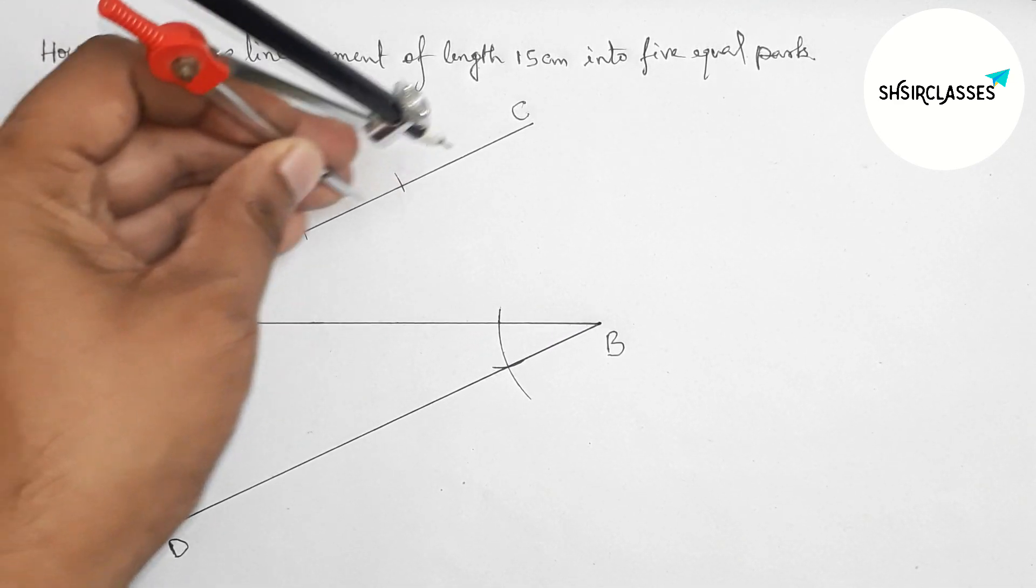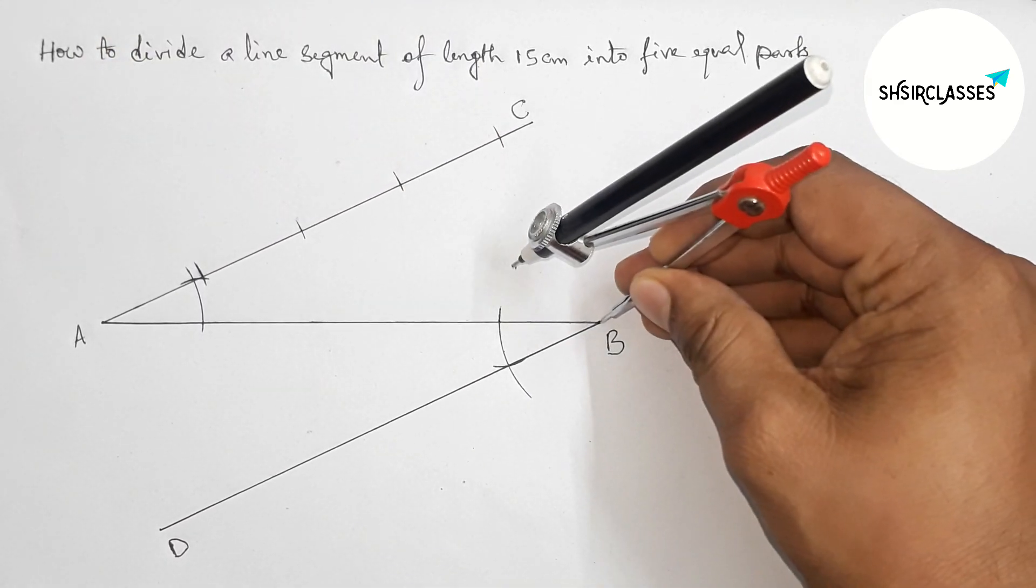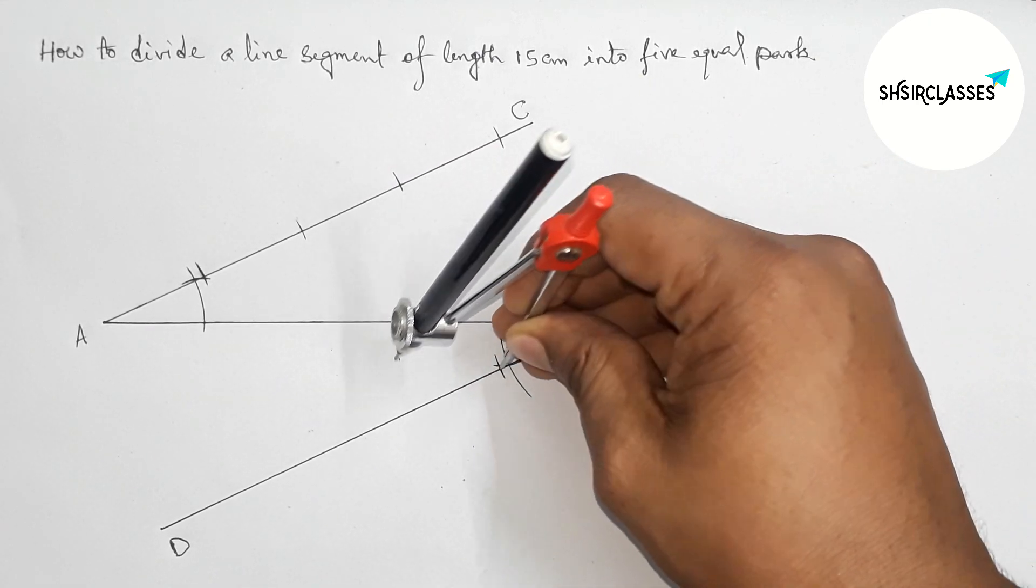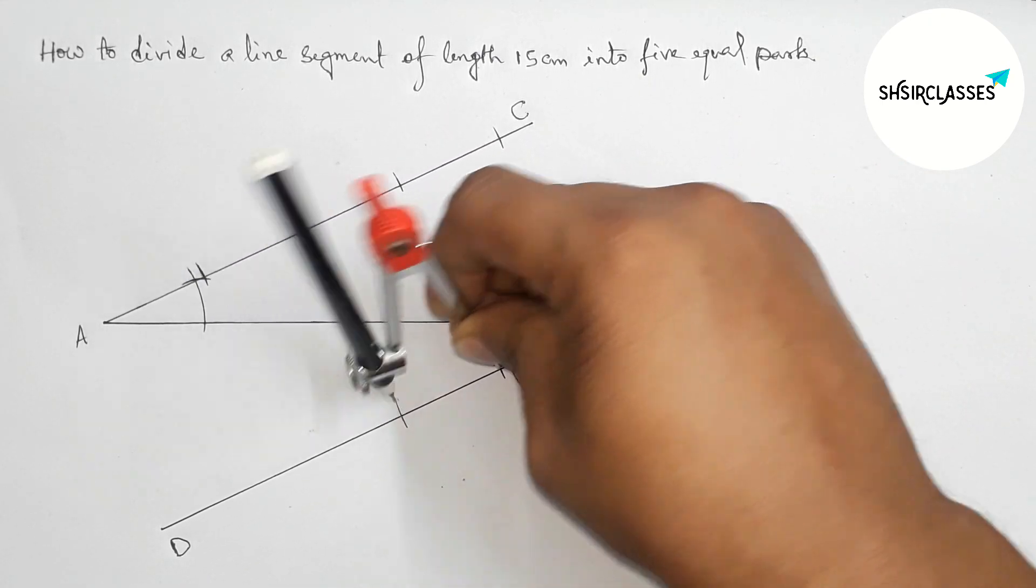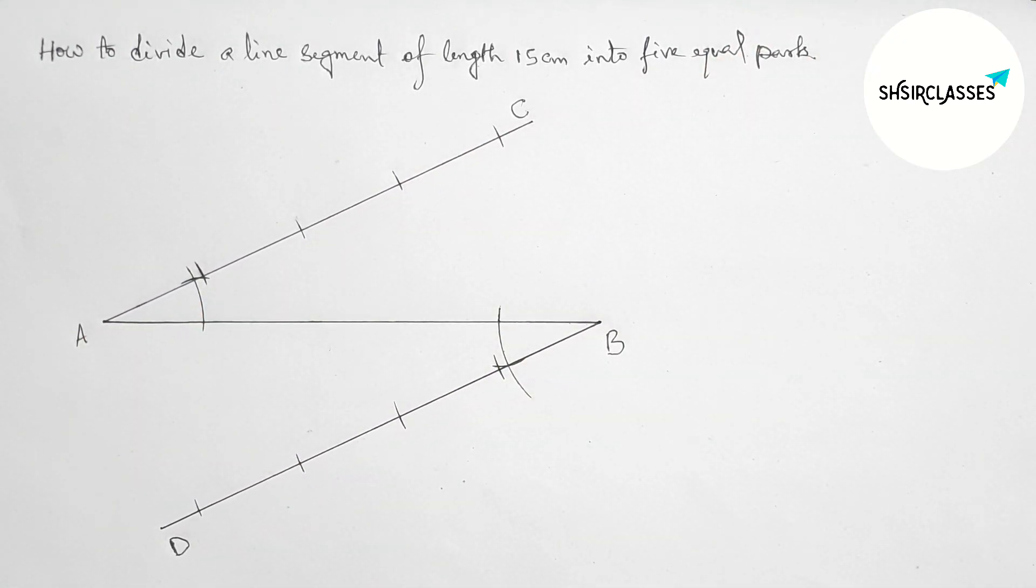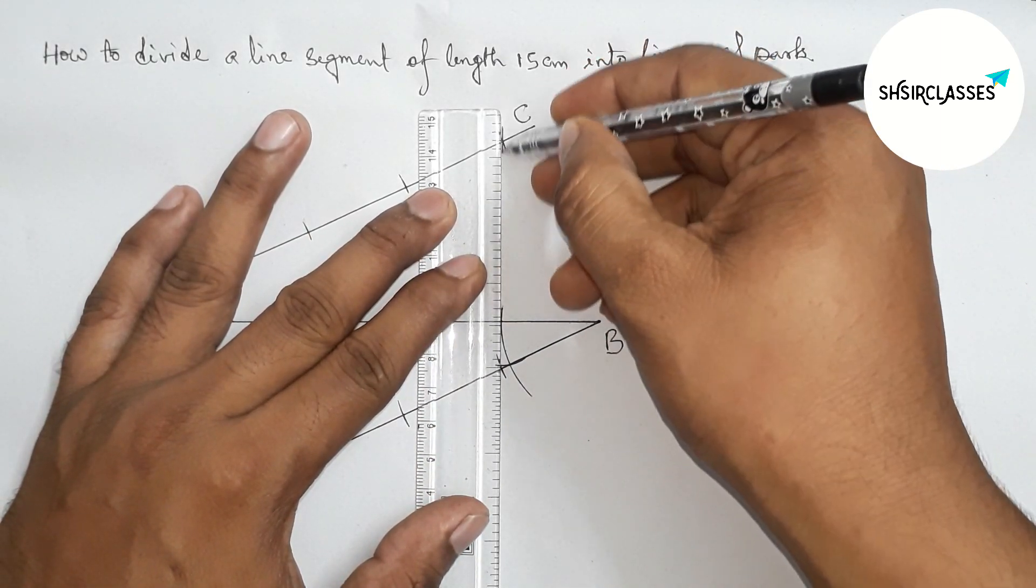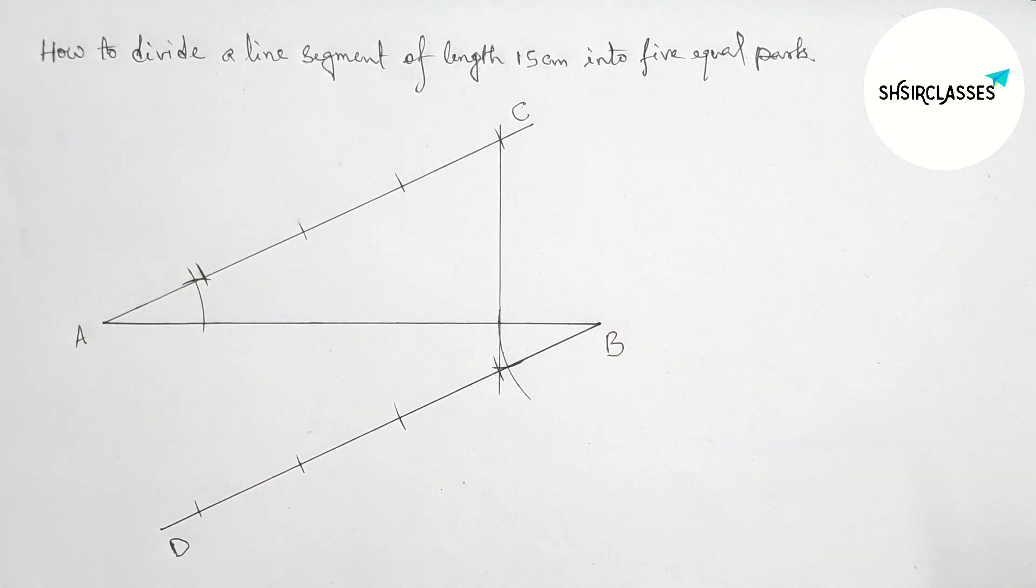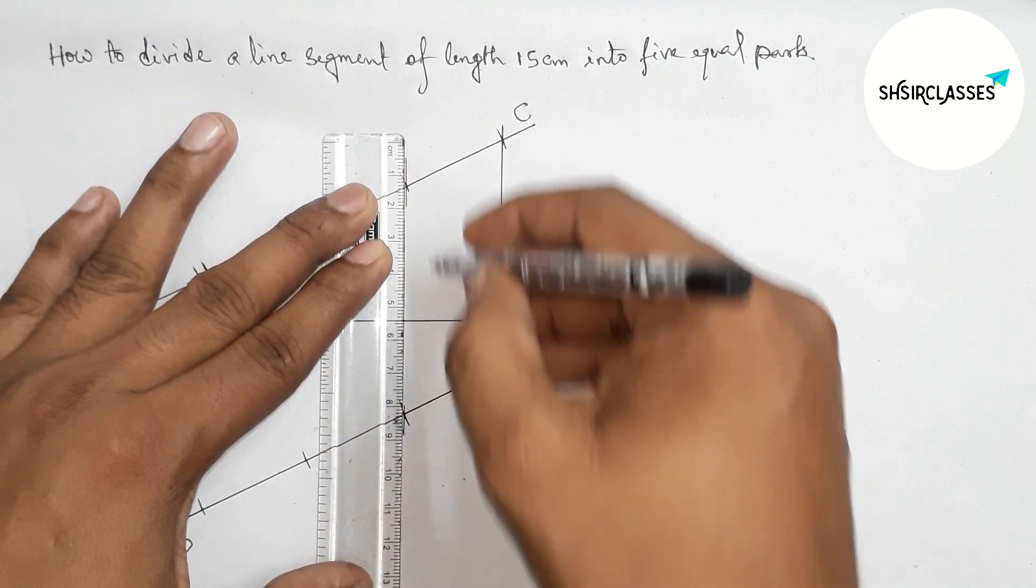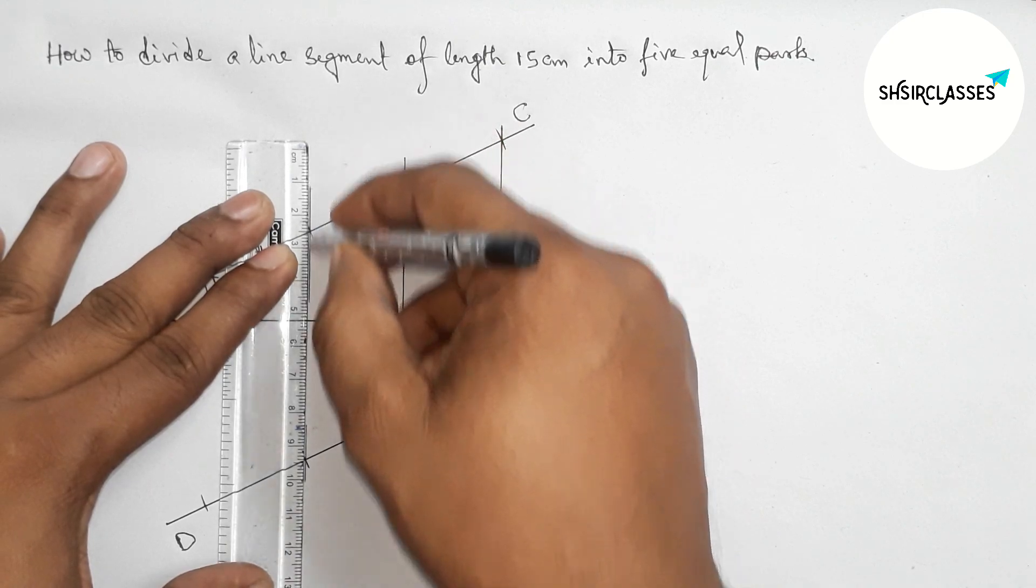With the same length, put the compass on point B and similarly take four equal parts from line BD in a similar way. Next, join these two points. Join these two points, and join these two points.